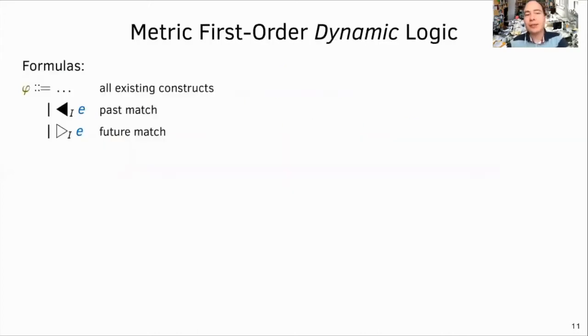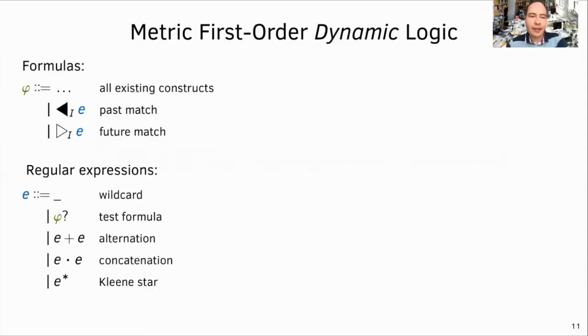Here is the full syntax of mFODL. Besides the existing mFODL operators, one can also use regular expressions for both past and future temporal patterns. And regular expressions can be wildcard, which matches any letter, a test which checks if a formula holds, alternation, concatenation and Kleene star, which have standard semantics. And what are the atomic letters in the regular expressions? Are they a set of events? They can be actually any mFODL formula. The formulas and regular expressions are mutually recursive in mFODL.